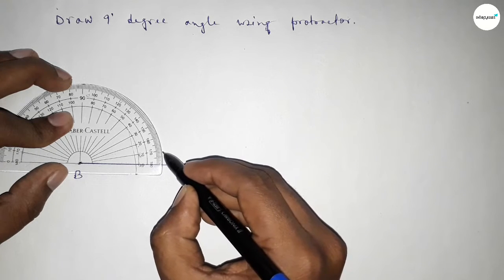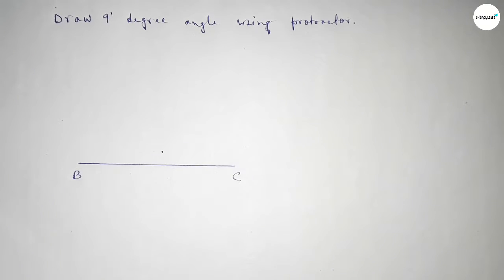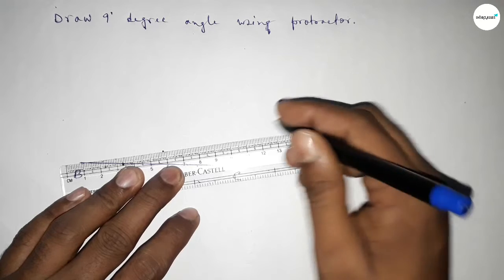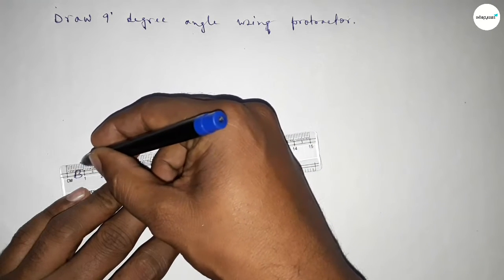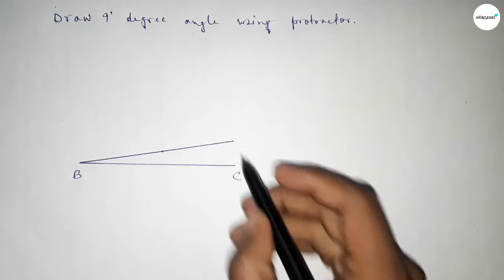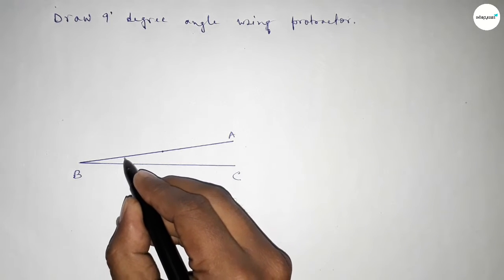Now joining this to get a 9-degree angle and taking here point A. So angle ABC.